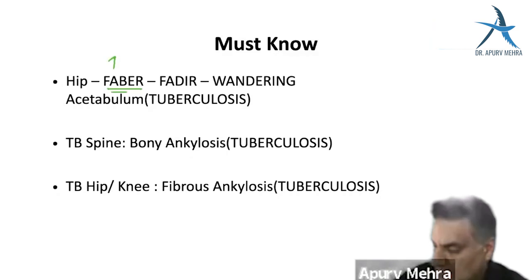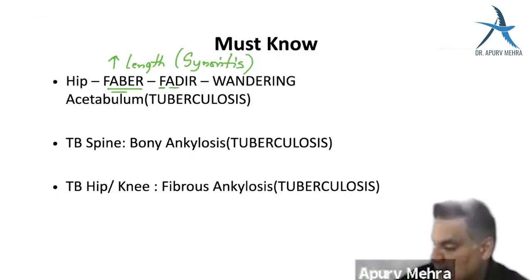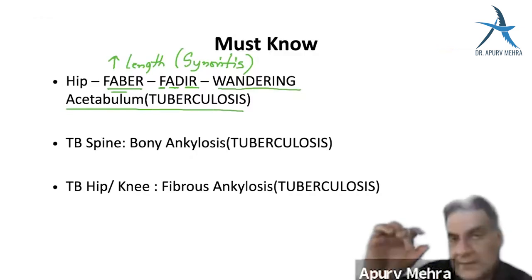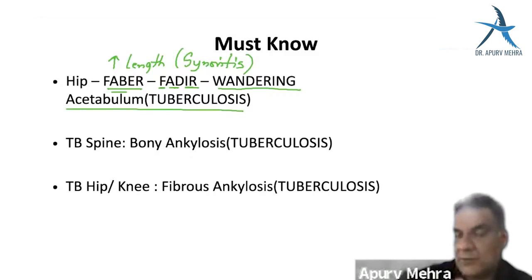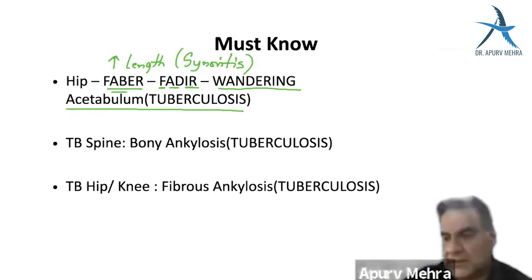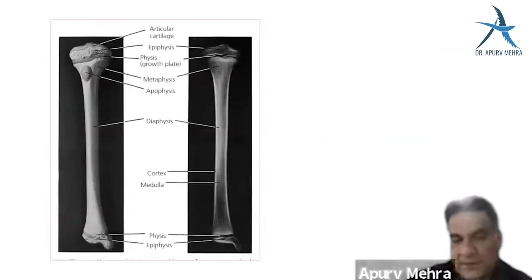In TB of the hip: early stage — flexion, abduction, external rotation (synovitis stage, apparent lengthening). As the joint worsens — flexion, adduction, internal rotation (seen in arthritis). In the final stage, destruction of the entire joint causes the femoral head to migrate — called 'wandering acetabulum.' TB spine treated well leads to bony ankylosis; TB of peripheral joints like the hip leads to fibrous ankylosis.